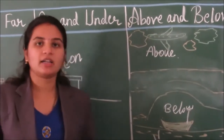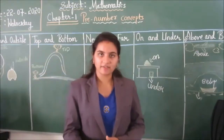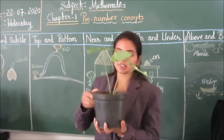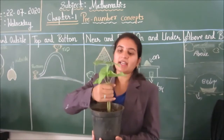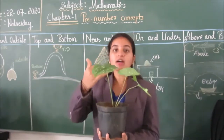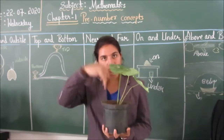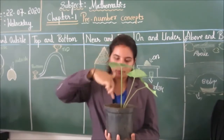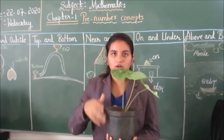Let us take another example. The stem and leaves grow above the soil, and roots will grow below the soil. Above, below.